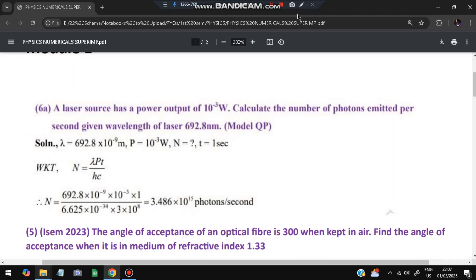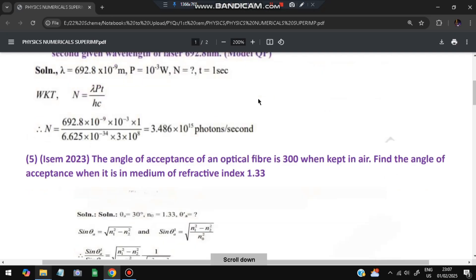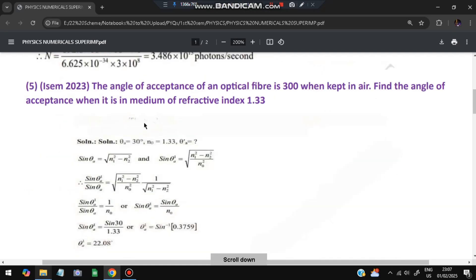The next type of question is angle of acceptance. The angle is 30 degrees when kept in air. Find the angle of acceptance when it is in a medium of refractive index 1.33. So the medium's refractive index is given, the refractive index of air is 1, and the angle is 30 degrees. We'll note down all those things: θ_a = 30 degrees and refractive index of medium = 1.33.